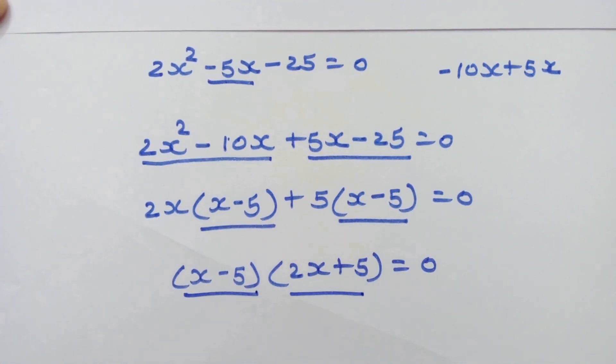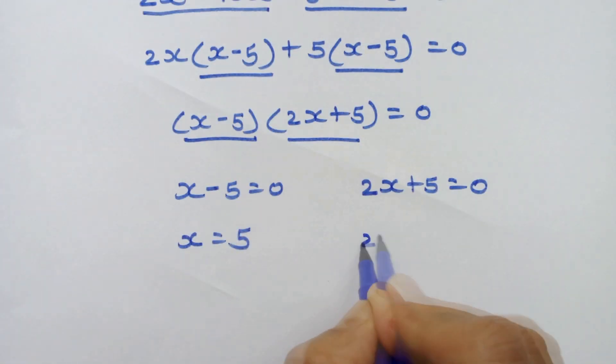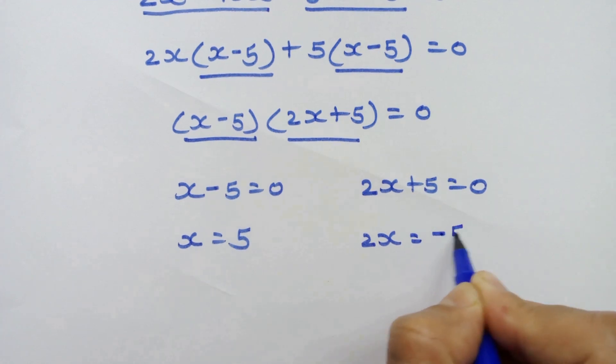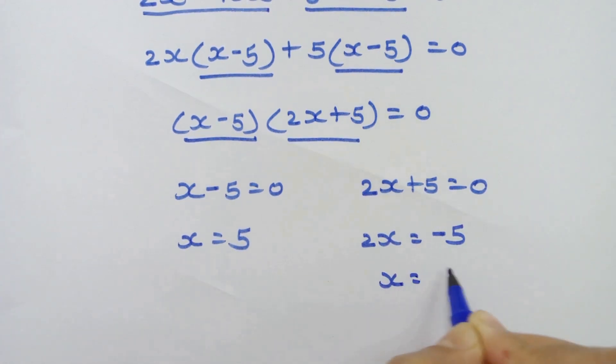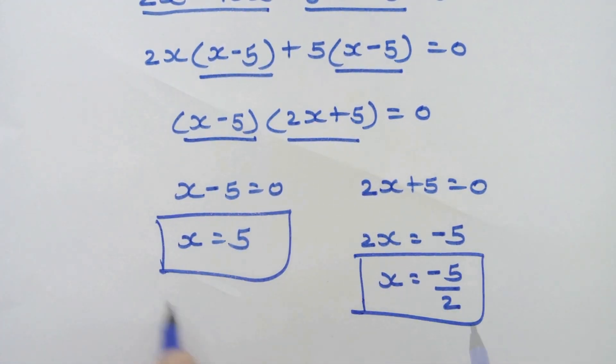We have two possibilities here. x - 5 = 0 and 2x + 5 = 0. So x = 5, and here 2x = -5, so x = -5/2. So we have two answers. That's it, we will meet again soon. Bye bye!